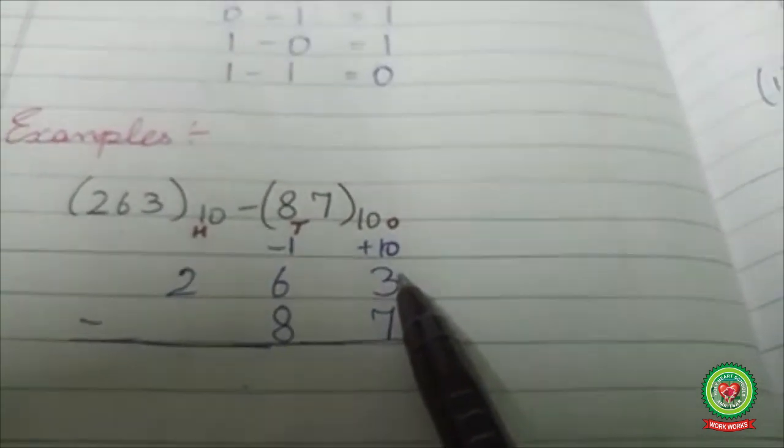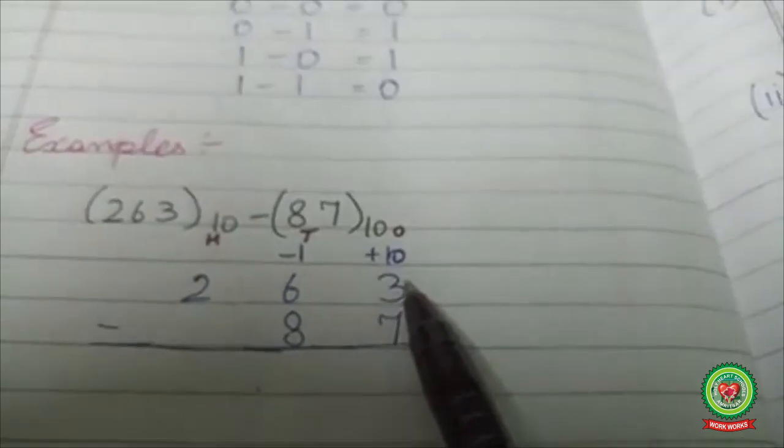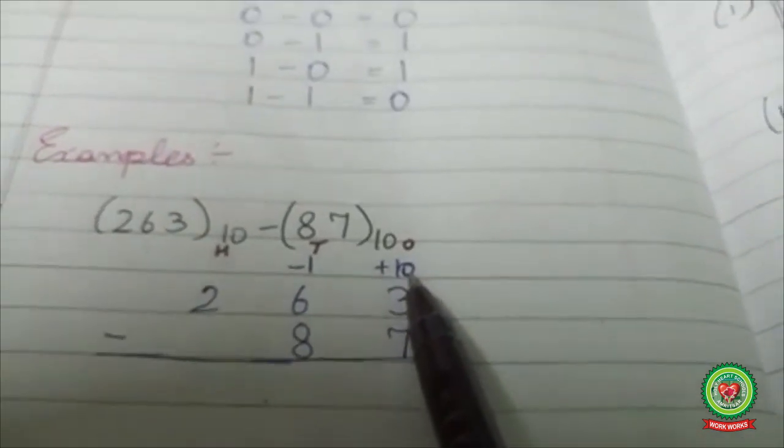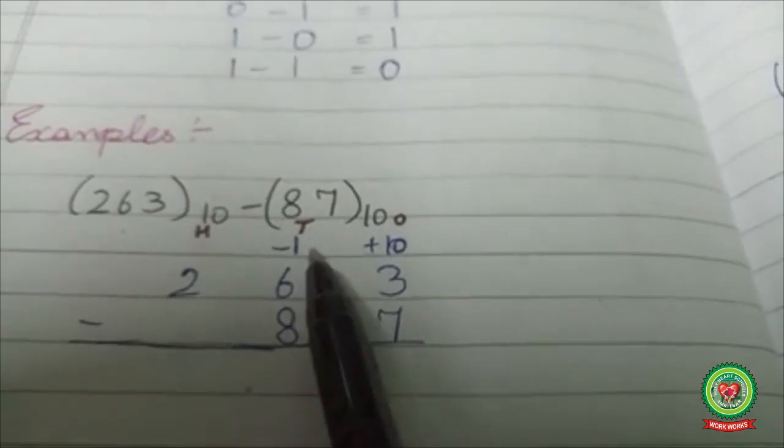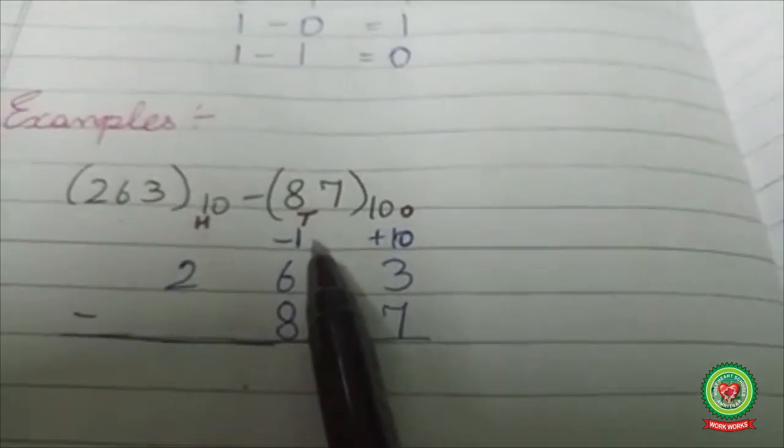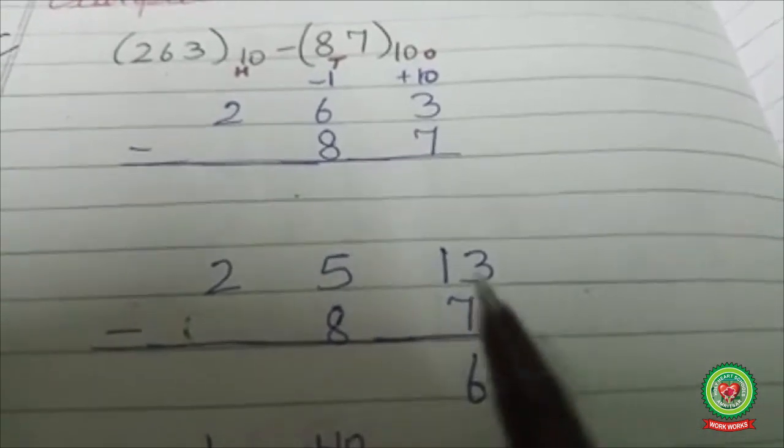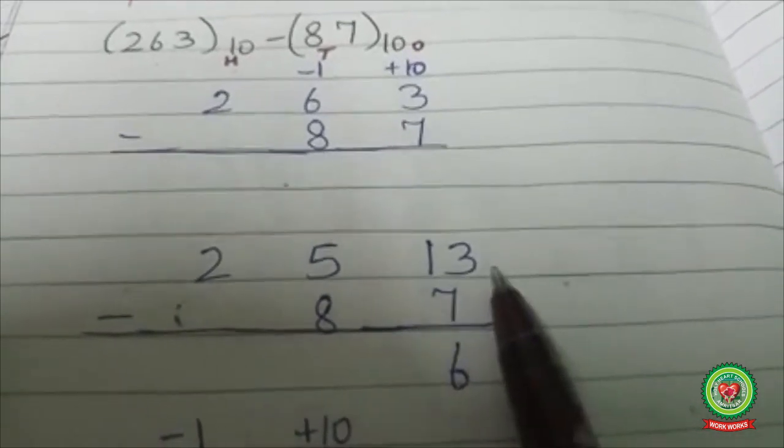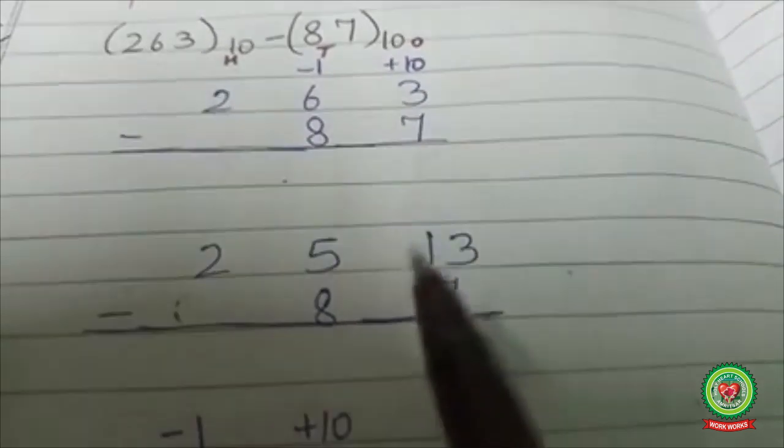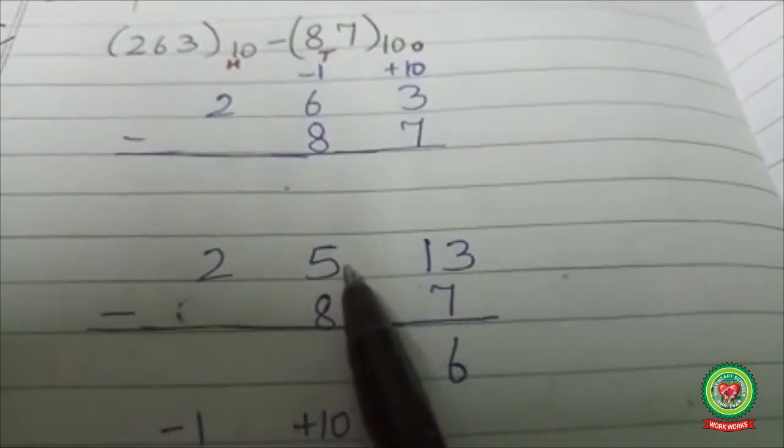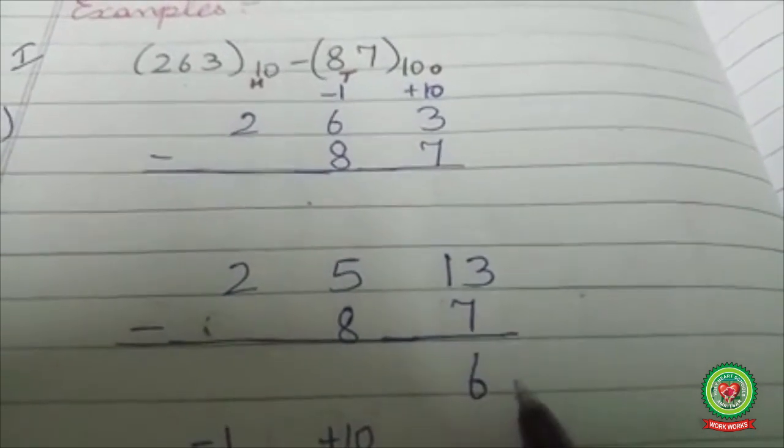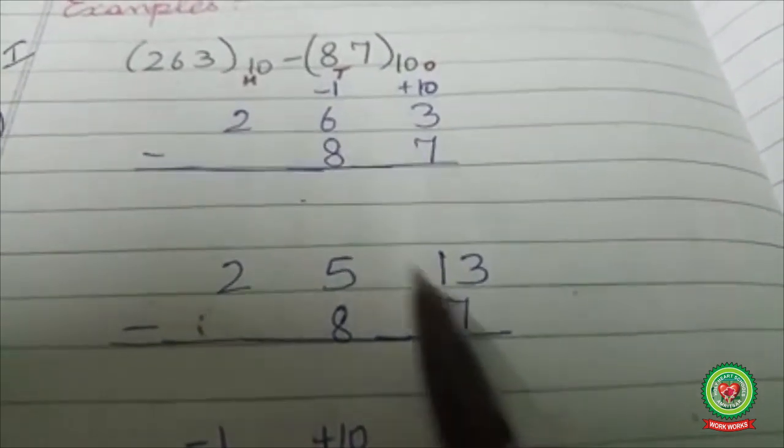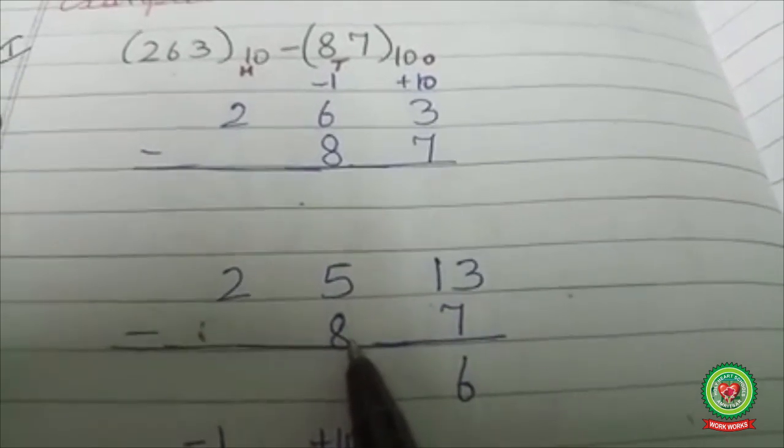Hence what is the technique? Here you will add 10, and from here you will subtract minus 1. Now the number becomes 13, and this number at tens place becomes 5. Now 13 minus 7 is 6.